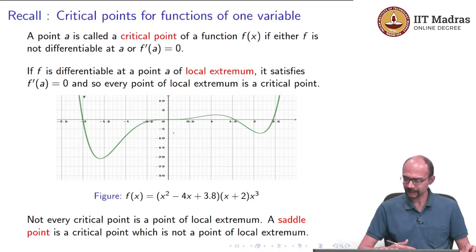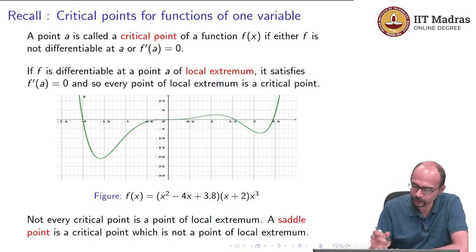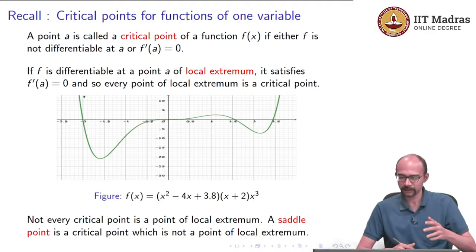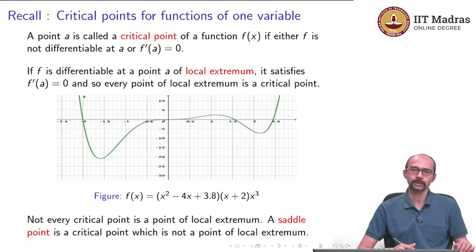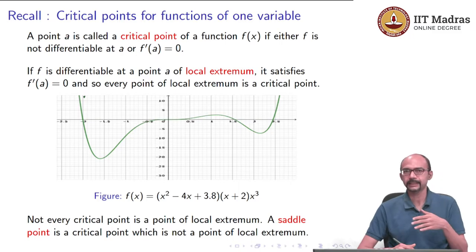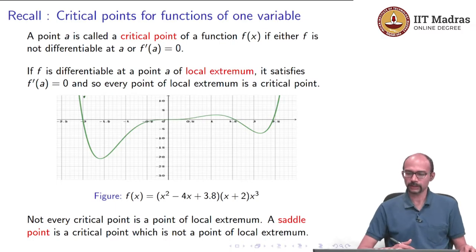A saddle point is a critical point which is not a point of local extremum. As an example at 0 for x³, f'(0) = 0 — you can see the tangent line is actually the x-axis — but it is clearly not a point of local extremum, because on the left the values are less than 0, on the right they are bigger than 0, and at 0 it equals 0.